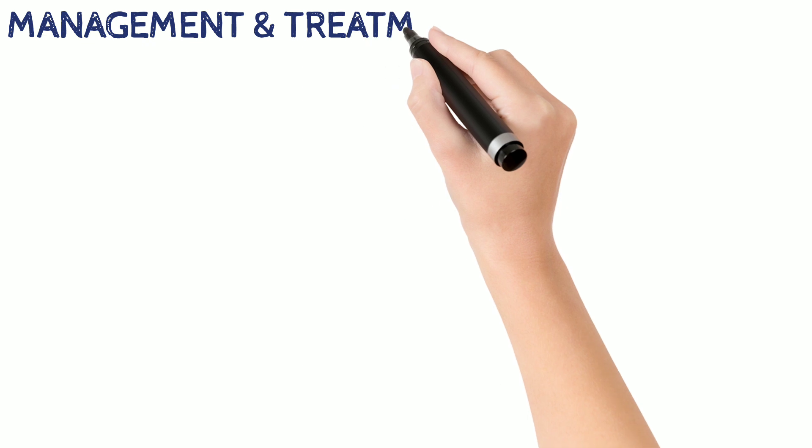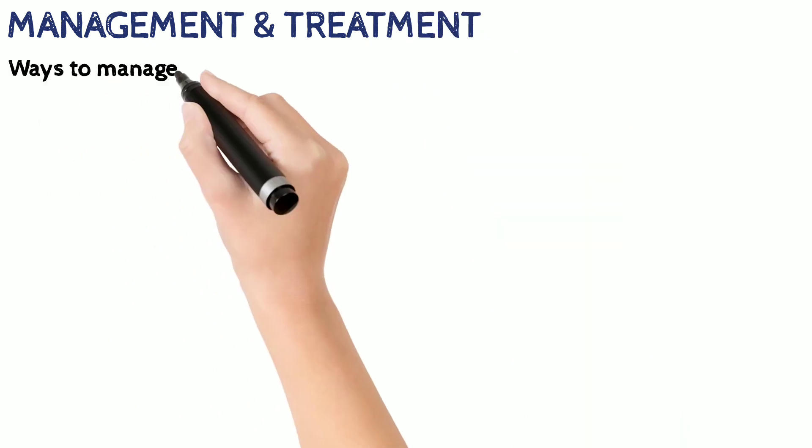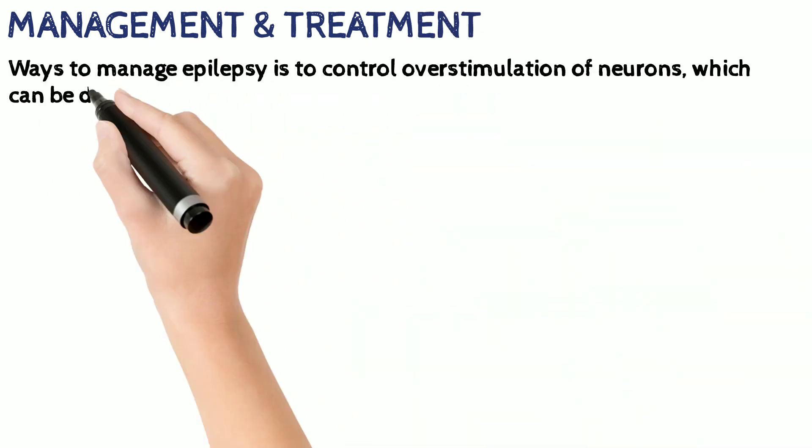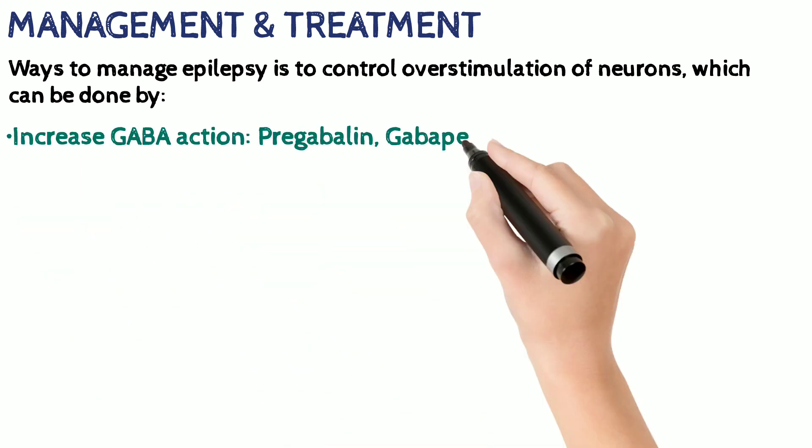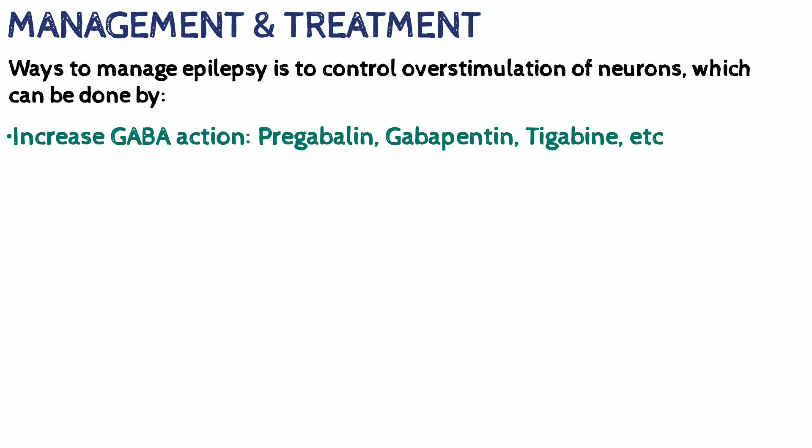As for the management, the primary goal is to control the overstimulation of neurons, which could be done by increasing the inhibitory neurotransmitter action—that is, the GABA action—which could be done by drugs like pregabalin. Anti-anxiety drugs like diazepam can be used too.